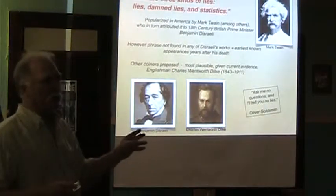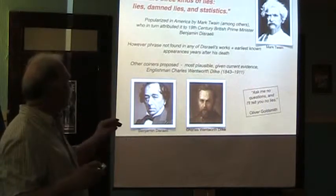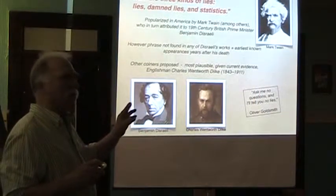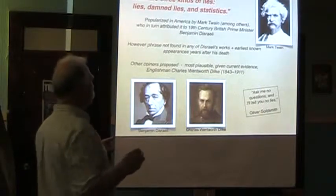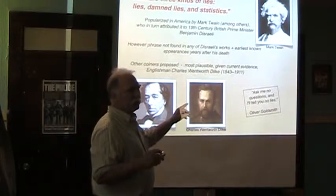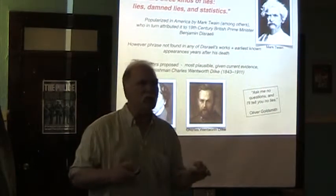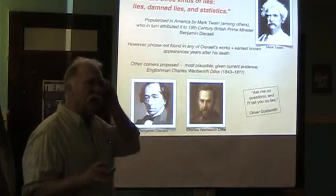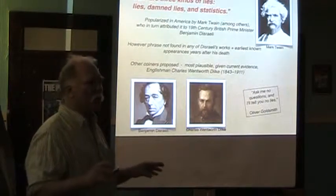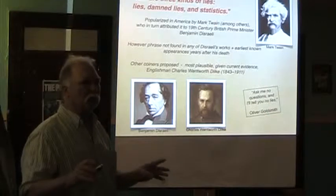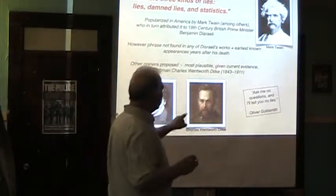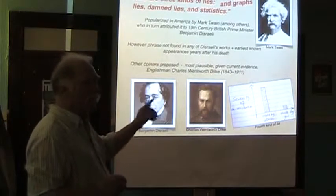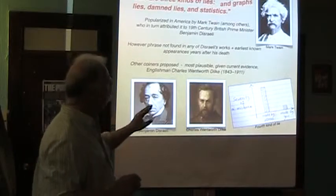I'm going to start with this quote, partly because I've always loved it. I variously attributed it to either Mark Twain or Benjamin Disraeli, the former British Prime Minister. It turned out that Mark Twain was a popularizer of the quote, but there's no evidence Disraeli ever actually said it. Historians have found an Englishman by the name of Charles Wentworth Dilke, who probably was the person who came up with the definition of the three kinds of lies. I would like to paraphrase and add something to it — and that is: and graphs. That's my fourth kind of lie.